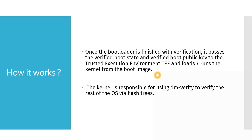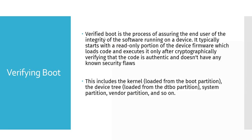The bootloader loads the VB meta, which has a data structure containing a hash tree, and checks against the different partitions. Once VB meta confirms this is a recognized and correct OS, control passes to the kernel. The bootloader passes control to the kernel, and the kernel is responsible for using DM Verity to verify the rest of the OS via hash trees.